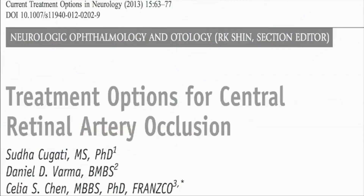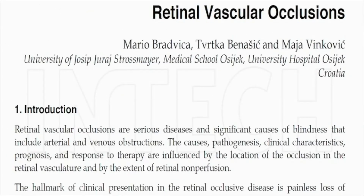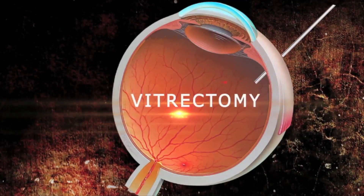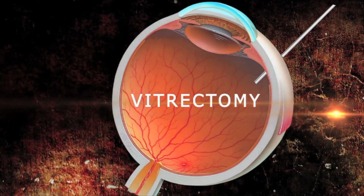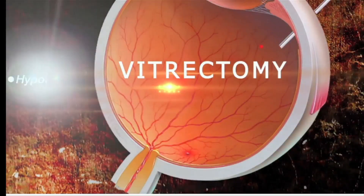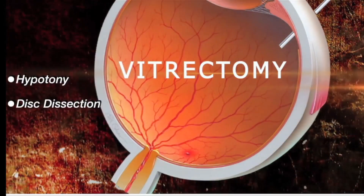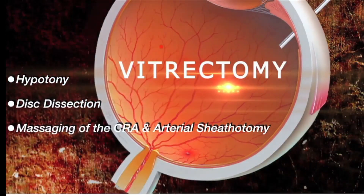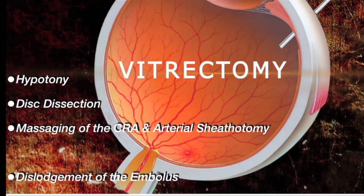Studies have shown that these therapies do not give significant amelioration in most cases. Given the limitations of medical therapies, vitrectomy promises to be a potential treatment option for this condition. Here we present a surgical technique using a combination of low IOP vitrectomy, disc dissection, and arterial massage, which helps in dislodging the embolus causing the CRAO.